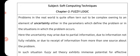Problems in the real world quite often turn out to be complex owing to elements of uncertainty — either in the parameters which define the problem or in the situation in which the problem occurs. Uncertainty may arise due to partial information, information not fully reliable, or due to receipt of information from more than one source about the problem.